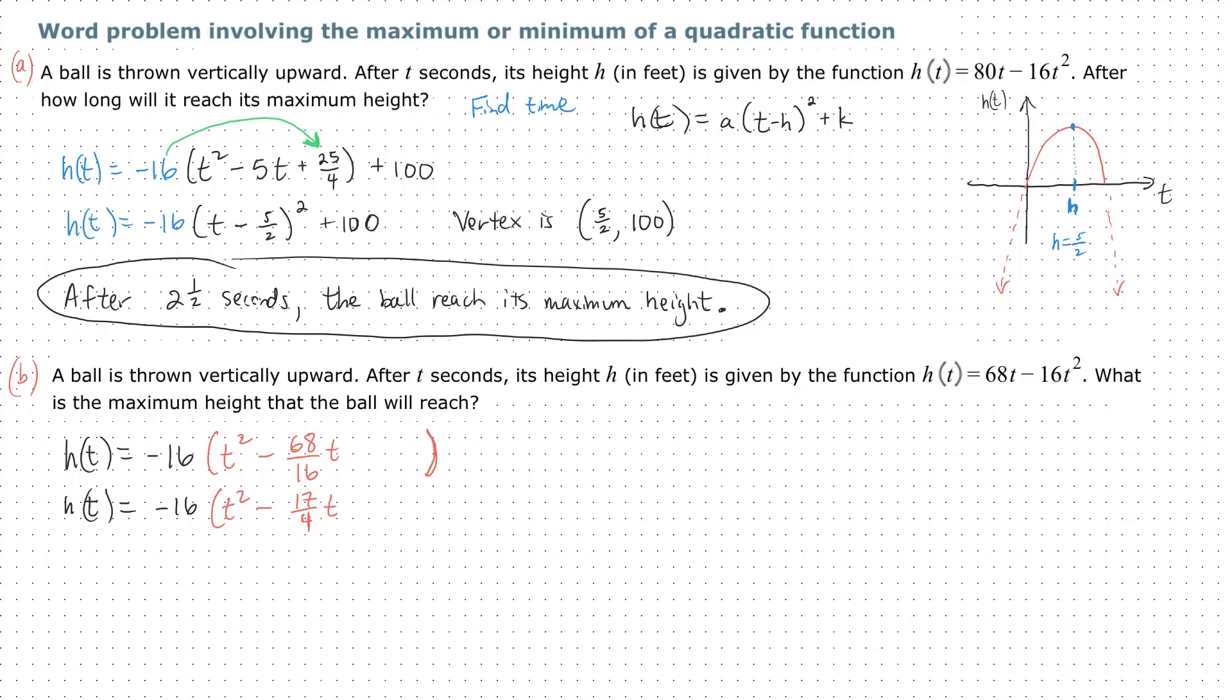And once again, you leave a space to complete the square. Divide 17/4 by 2, we get 17/8. So to complete the square, I'm going to take 17 over 8, squared here, and 8 squared, and of course 8 squared is 64.